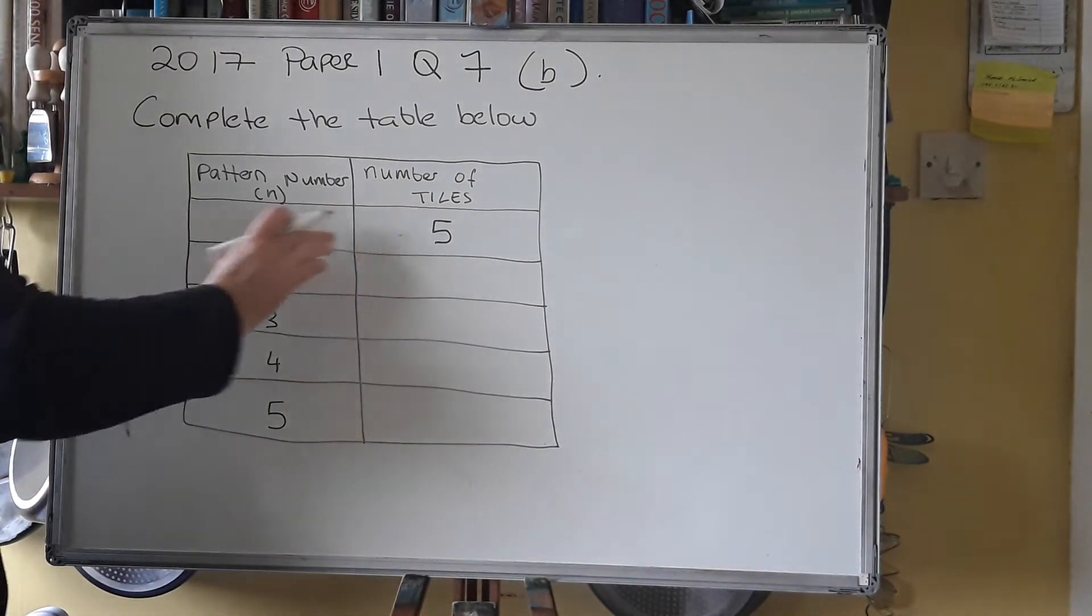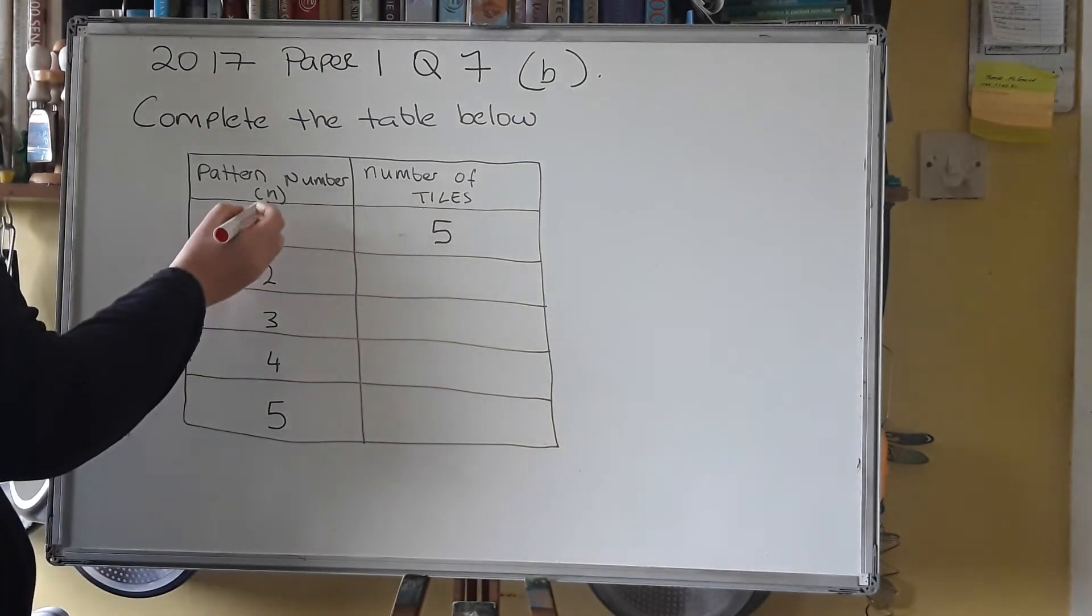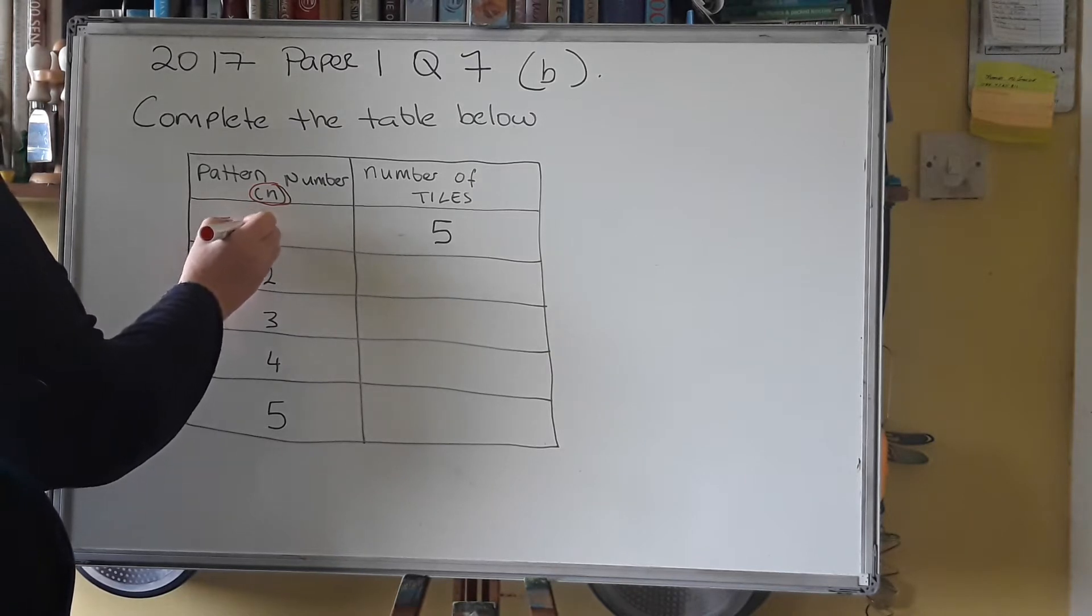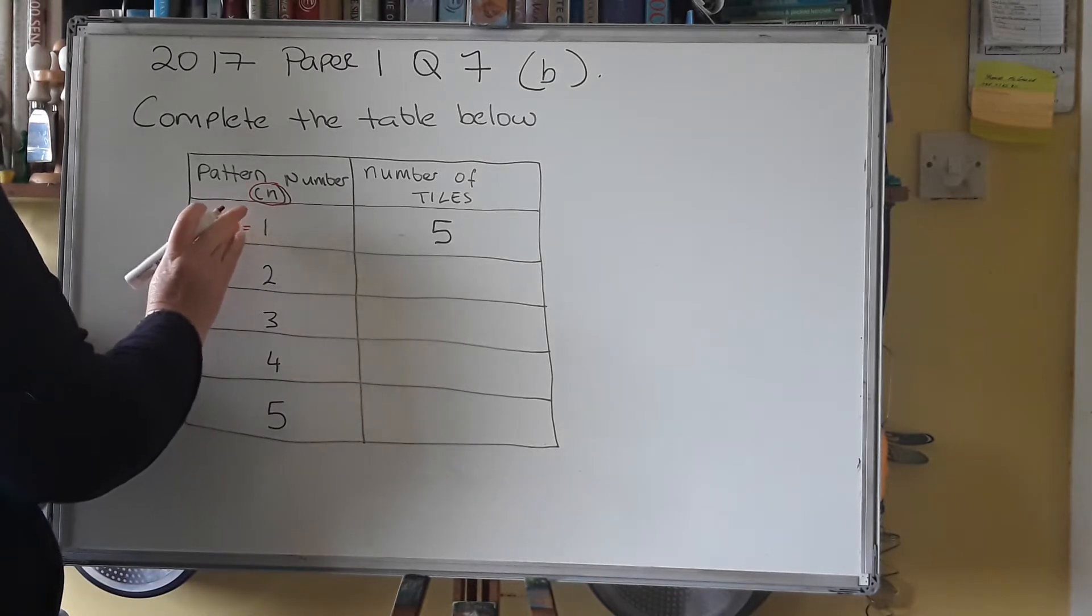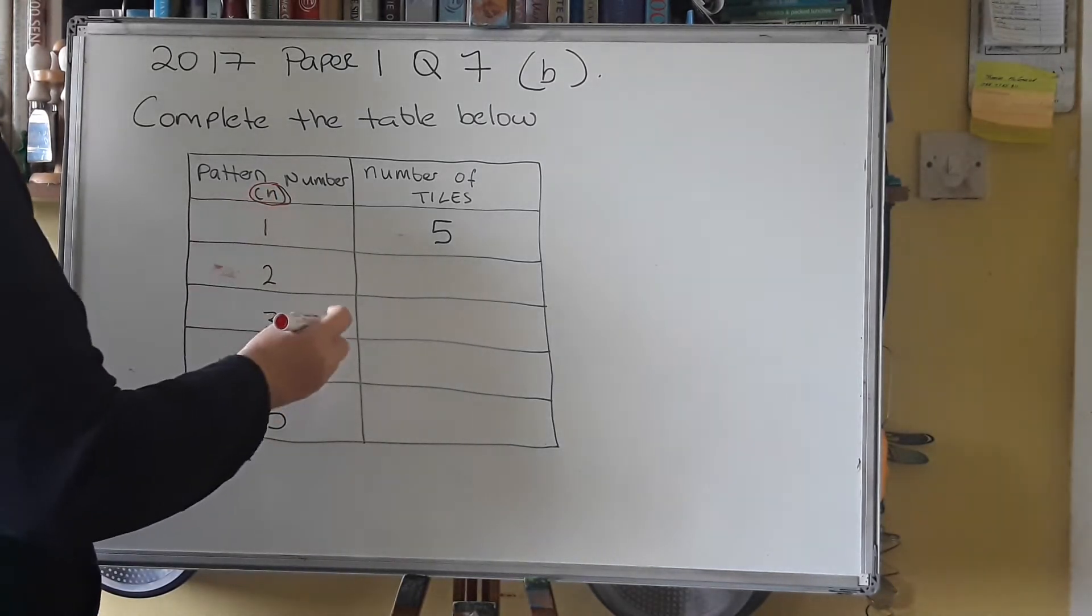So they've already done the first one. There's 5 tiles in the first pattern. And again, notice that the pattern number is represented by N. So this would be T, N is 1. Here T, N here is 2. That should be what N stands for. If you're writing them as T, term 1, term 2, so N is this number here.